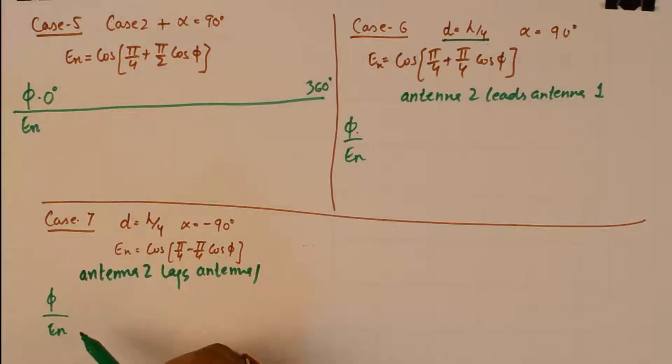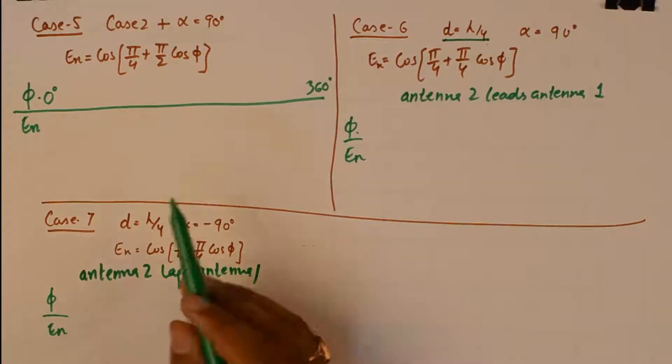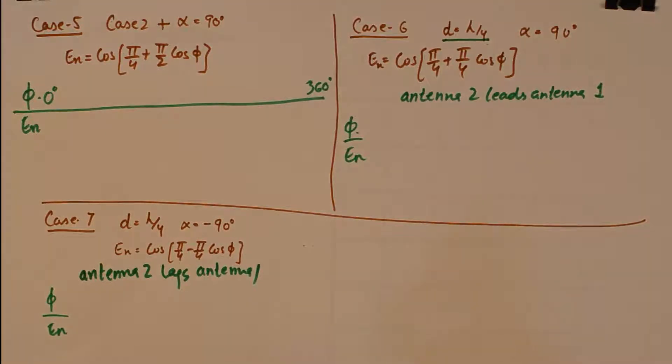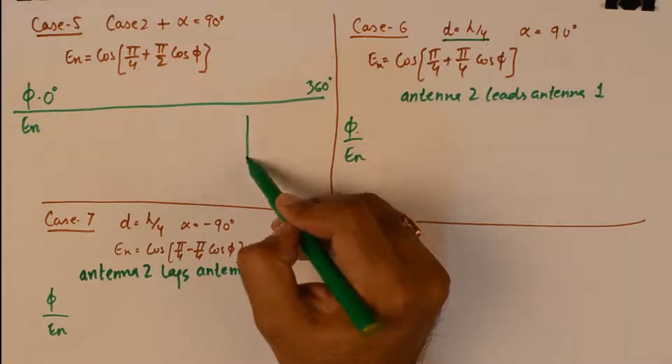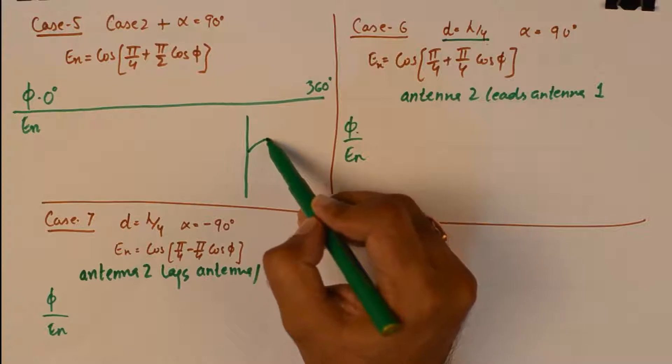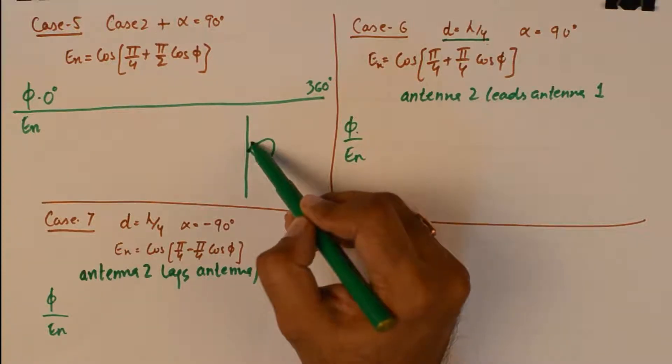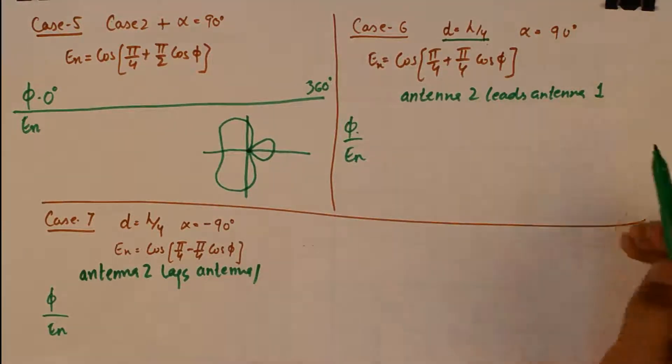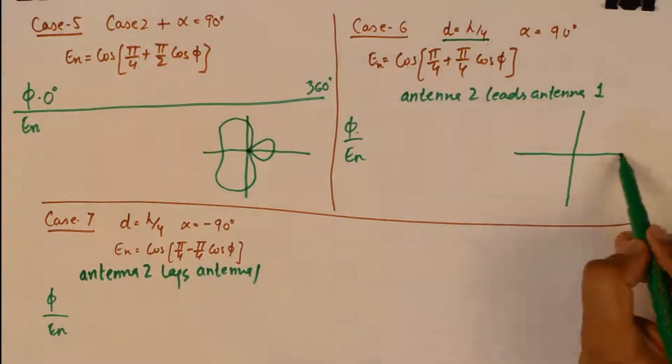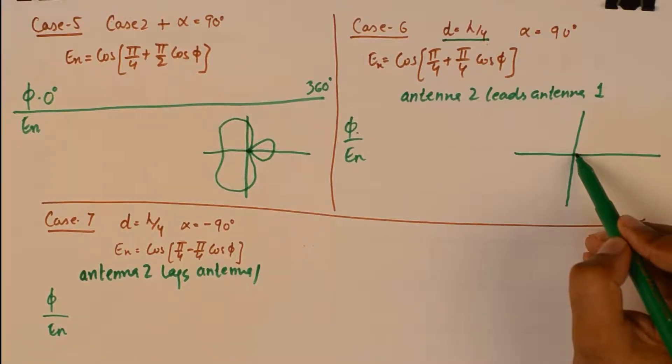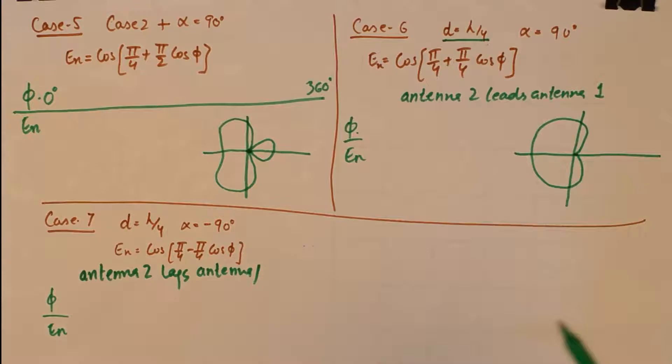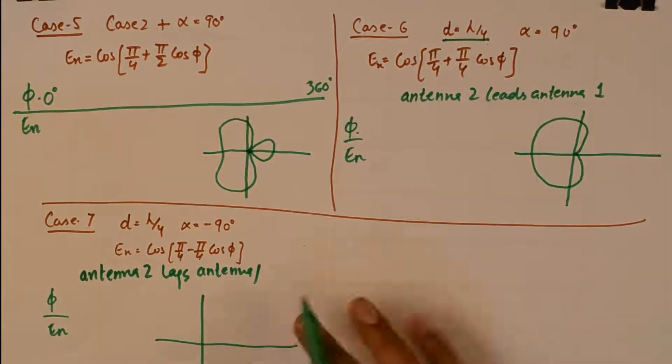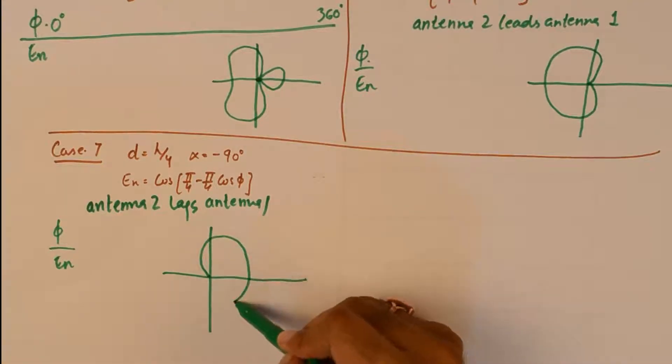And you can find the value of normalized E for these three cases in the PDF which is given in the link description. But over here I will draw the radiation patterns which are important. The radiation pattern of this antenna would look something like this. The radiation pattern of this antenna array would look something like this. And the radiation pattern of antenna 7 would look like this.